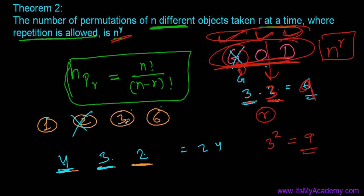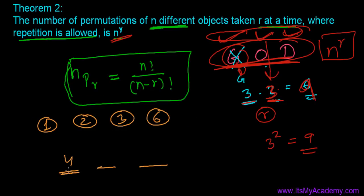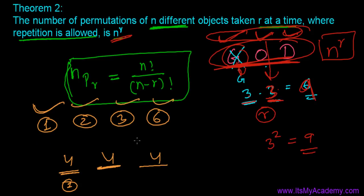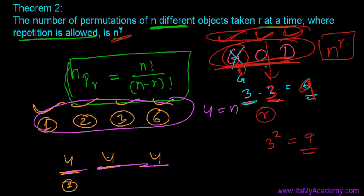Now when repetition is allowed, each of the three positions can be filled with any of the four digits. So it's four times four times four, which is 4 to the power 3, equal to 64. Here n equals 4 and r equals 3, confirming the formula n to the power r.